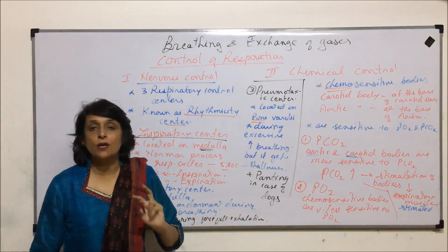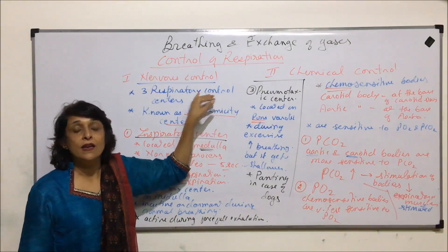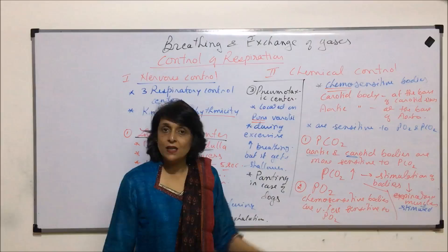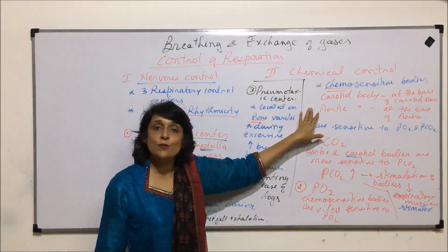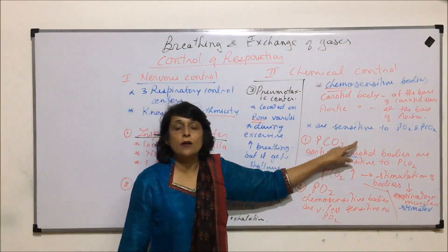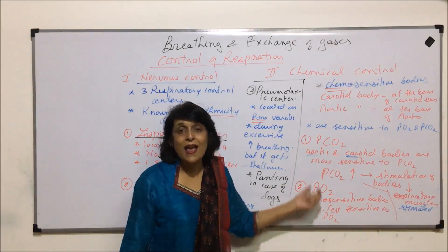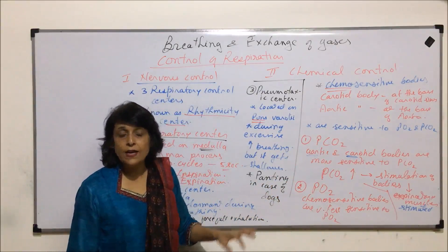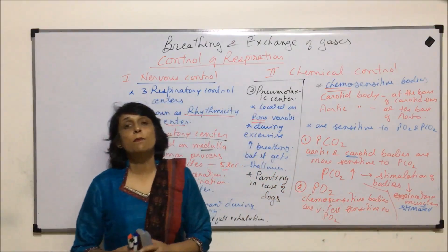So our respiration is controlled in two ways. One is nervous control, where there are special centers on the CNS — two are on the medulla and one is on the pons. The second mechanism is chemical control, where partial pressure of oxygen and partial pressure of carbon dioxide are responsible. The aortic and carotid bodies are more sensitive to carbon dioxide concentration than to oxygen, and they respond as soon as there is an increase in carbon dioxide concentration in our blood so that the extra carbon dioxide can be forcefully exhaled. This is how breathing gets controlled.